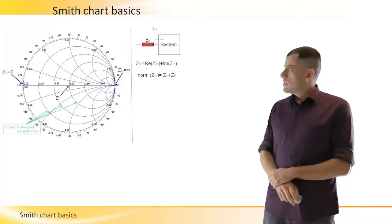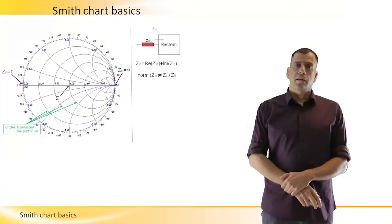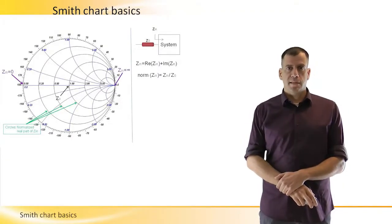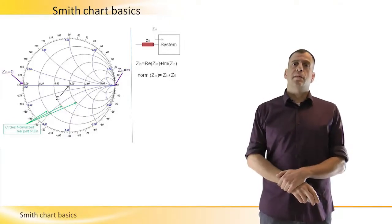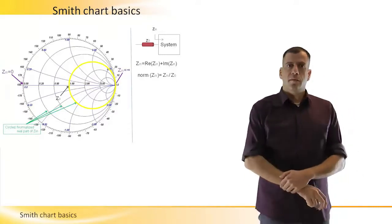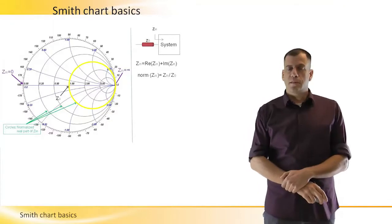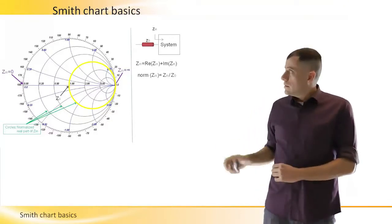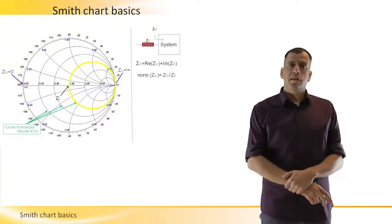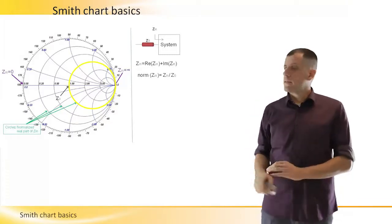The circles on the Smith chart represent the real part of the input impedance, which is the resistance. The unity circle, which is the circle that passes through the center of the Smith chart, represents the real part which is equal to ZO. Since it is normalized, then it is the unity circle and the resistance is equal to one.